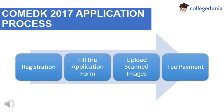Comet K UGT 2017 application form includes 4 steps. First, online registration. Second, filling of the application form. Third, uploading scan images. And the last is paying off the application fee.